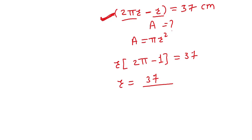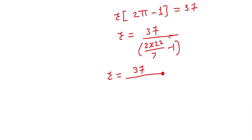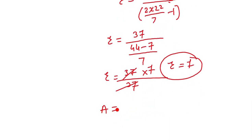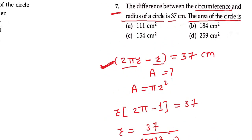π को 22/7 लिखो: 2 × 22/7 − 1 = (44 − 7)/7 = 37/7। So r = 37 / (37/7) = 37 × 7/37 = 7। Radius = 7। Area = (22/7) × 7 × 7 = 22 × 7 = 154 cm². Option C — 154 cm square।